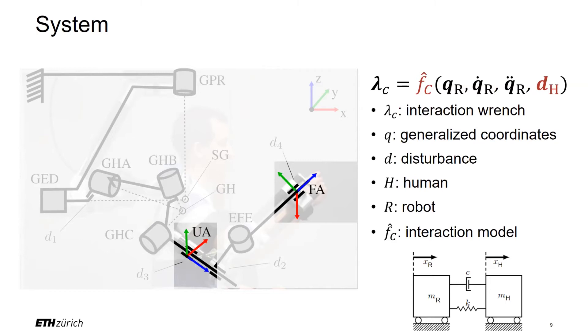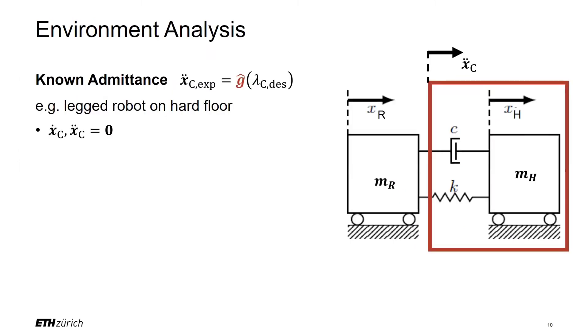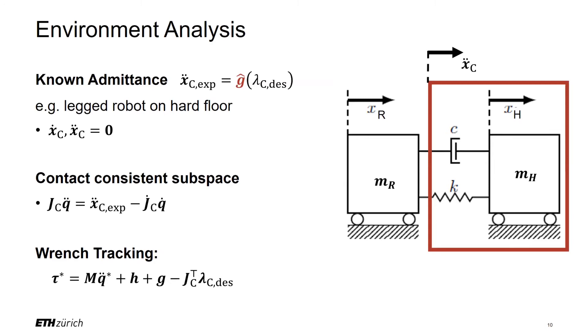To derive a good control policy, we have to know the characteristics of the environment we are dealing with. For many applications in robotics, we assume to interact with an environment of known admittance. For example, for leg robots, often the hard floor is assumed. This allows to project the equations of motion to support consistent null space by applying following constraints on q̈. In this case, a feed-forward controller with feedback linearization of the device's dynamics works well and is the standard choice in many state-of-the-art robotic systems.